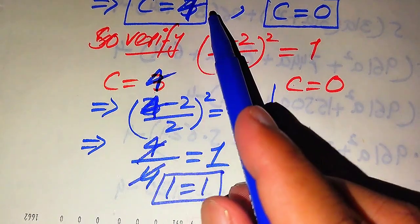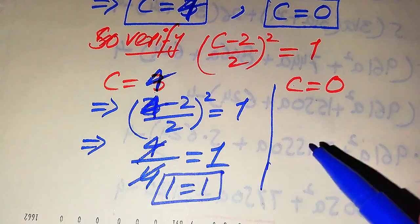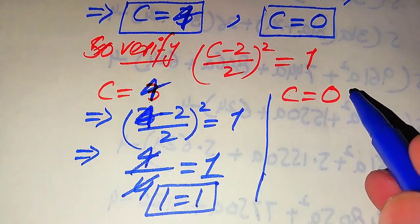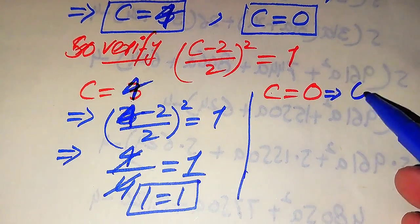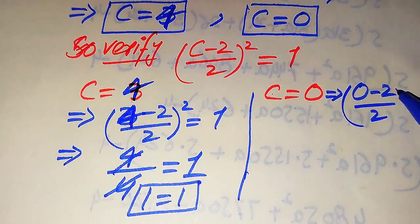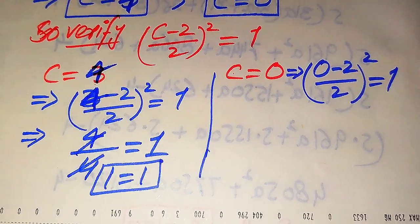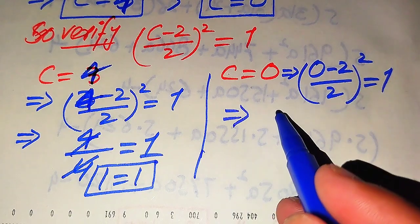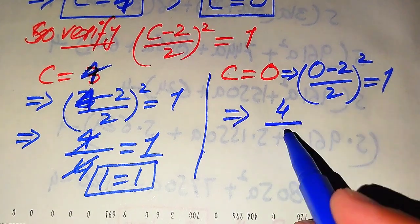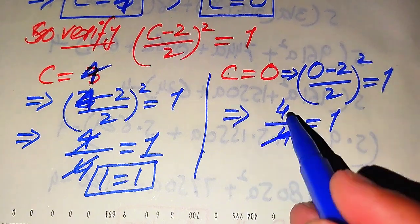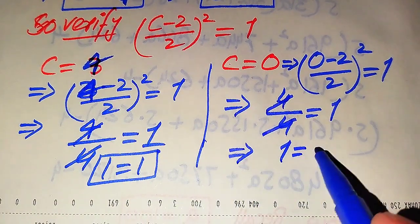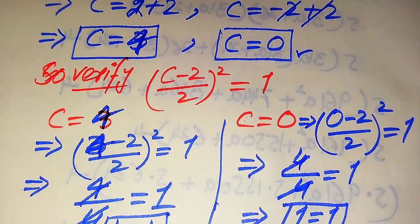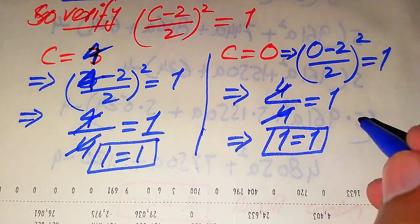Now we verify the second value c equals 0. Substituting into the equation: (0 minus 2) divided by 2, whole square equals 1. We get minus 2 divided by 2, whole square equals 1. Minus 2 squared is 4 and 2 squared is also 4, so 4 over 4 equals 1, giving 1 equals 1. So the second value c equals 0 also satisfies the given equation. Both values are solutions.